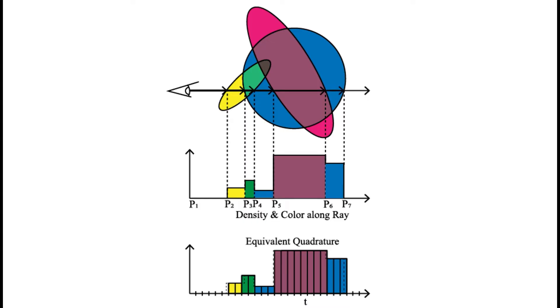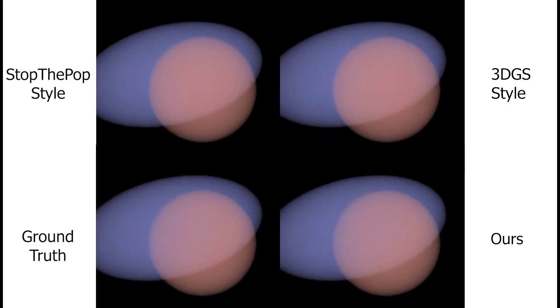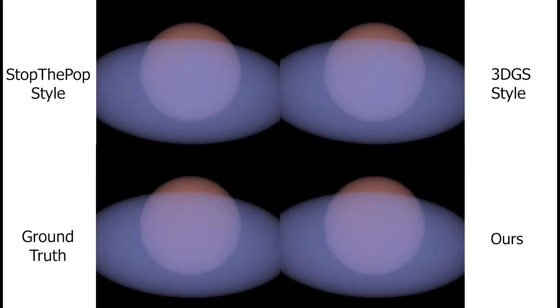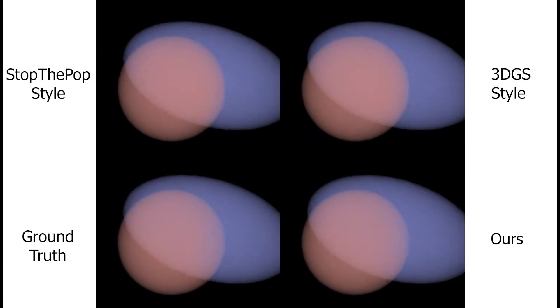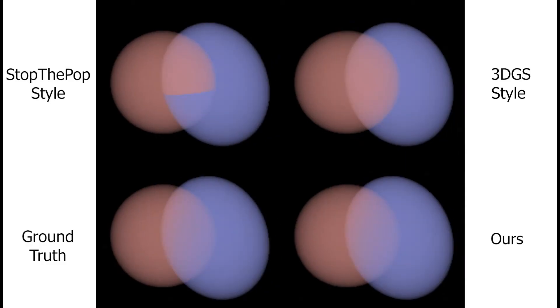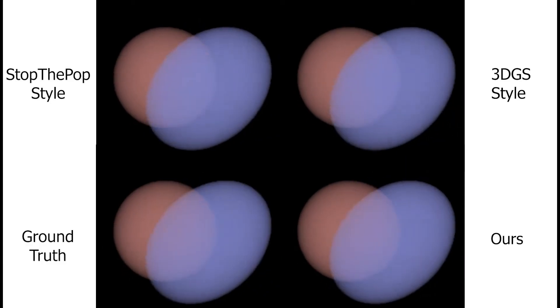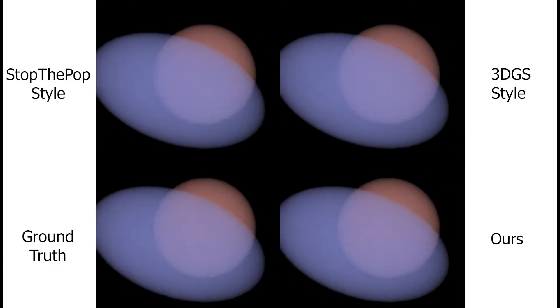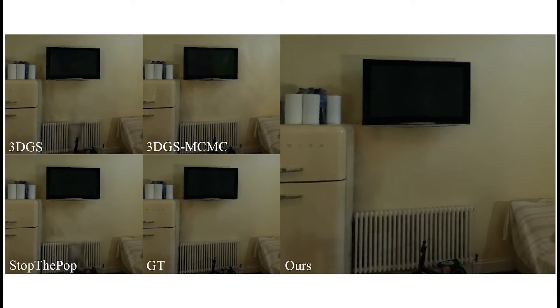The result is that, instead of producing an approximation of the appearance of the field like 3DGS and Stop the Pop, our method matches the ground truth appearance of the field as computed via quadrature. The improved blending of our method is most visible here, on a simple wall colored by light and shadow. The other splatting-based methods struggle to reproduce the color of this wall because the gradient does not match a Gaussian falloff. Here, we shrink and expand the primitives in a scene, to show that our method is able to reproduce the appearance by blending a few primitives.